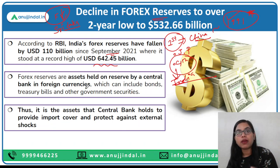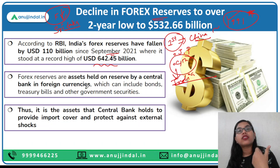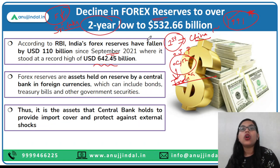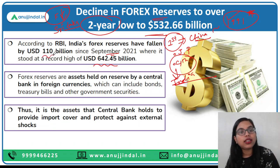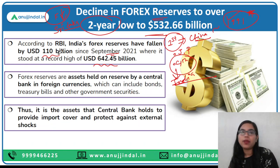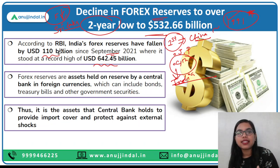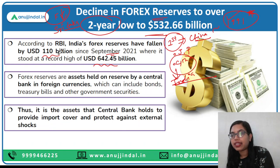In September 2021, India had a record high of 642.45 billion USD in forex reserves. But over this 13-month period from September 2021 to October 2022, our forex reserves have fallen to a two-year low of 532 billion — a decline of around 110 billion dollars. This news shows that our forex reserves have been very quickly depleted.